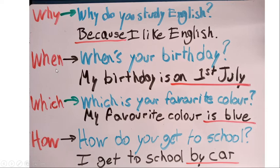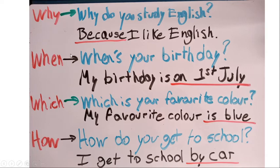The next question word is 'when.' 'When' is used to talk about days or dates. For example: 'When is your birthday?' — My birthday is on the first of July. This is the date, and we use 'when' because we want to know what the date is.